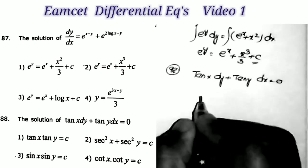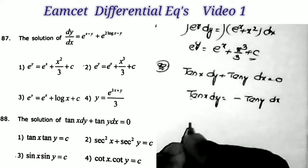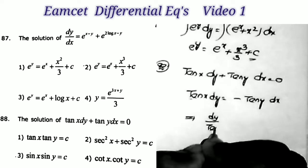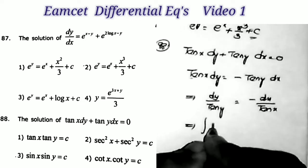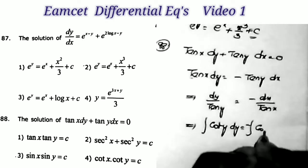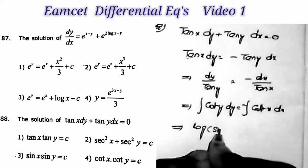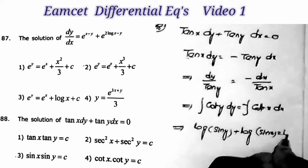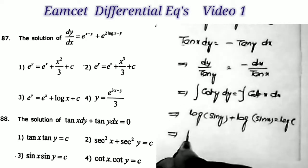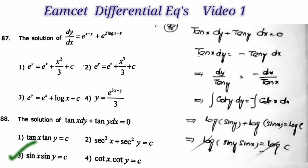Next question: the solution of tan(x)dy + tan(y)dx = 0. We write tan(x)dy = −tan(y)dx, separating variables: dy/tan(y) = −dx/tan(x), i.e., cot(y)dy = −cot(x)dx. Applying integration: integral of cot y = log(sin y), and minus integral of cot x = −log(sin x), adding constant log c. So log(sin y) + log(sin x) = log c, therefore sin y · sin x = c, which is the third option.